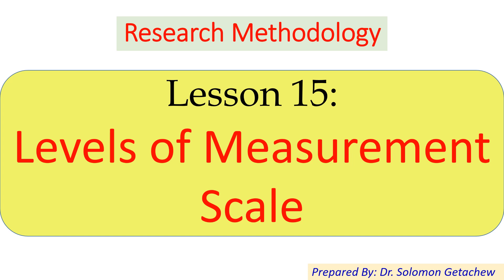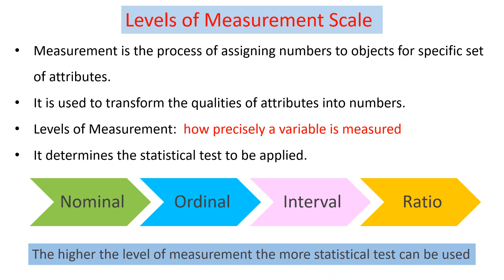Hello everybody and welcome back to lesson 15: Levels of Measurement Scale. Before moving to the main discussion, let's define what measurement means. Measurement is a process of assigning numbers to objects for a specific set of attributes, and it is used to transform the quality of attributes into numbers. For example, if we want to measure weight, we say 50 kilograms, 60 kilograms, and so on — those numbers are just the assigned numbers or a representation.